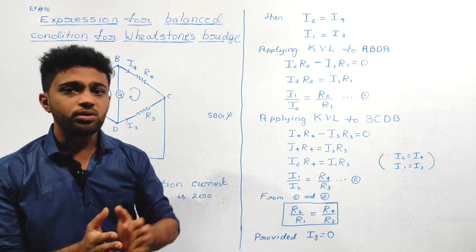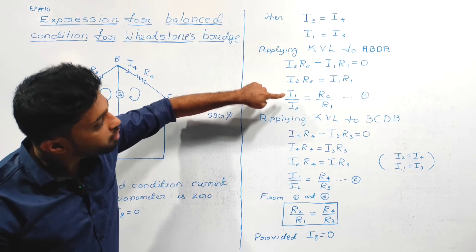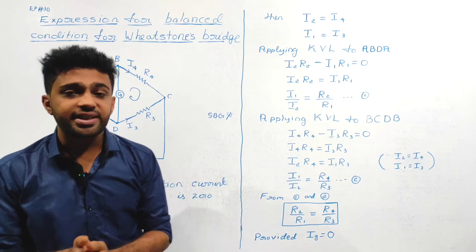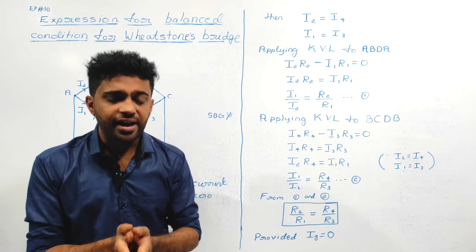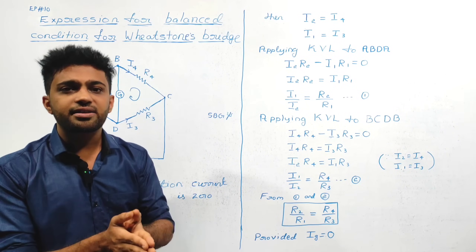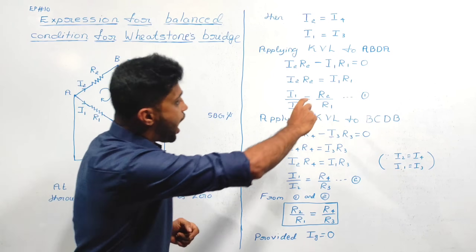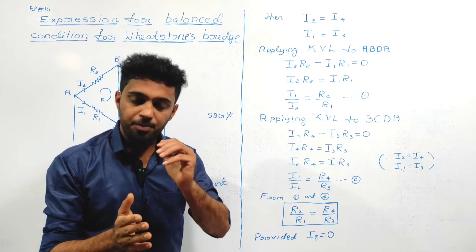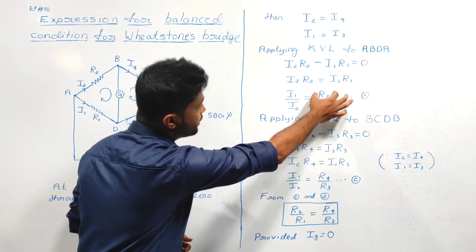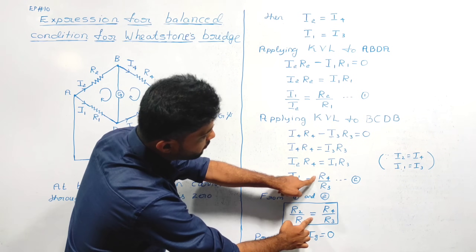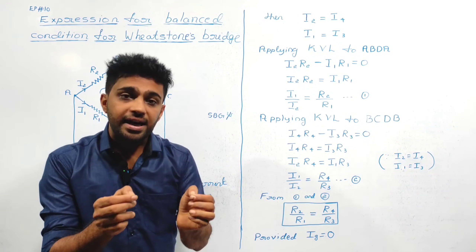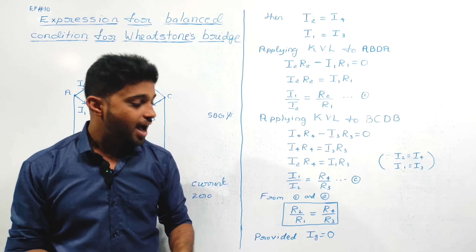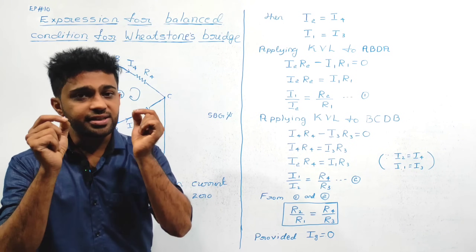From equations 1 and 2, the left-hand sides are the same: I1 divided by I2 equals R2 divided by R1 from equation 1, and I1 divided by I2 equals R4 divided by R3 from equation 2. Therefore, R2 divided by R1 equals R4 divided by R3. This is the balanced condition for the Wheatstone bridge or Wheatstone network, provided IG equals zero — that means the current through the galvanometer is zero.